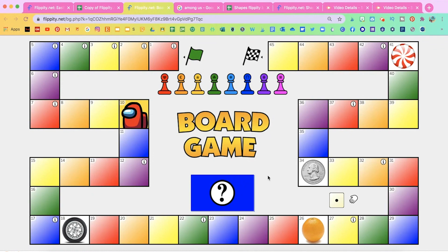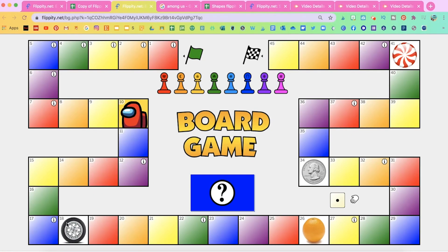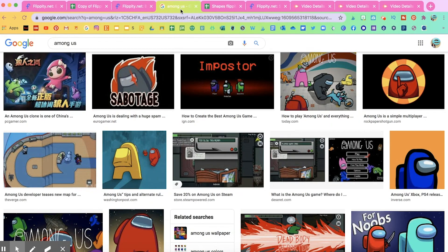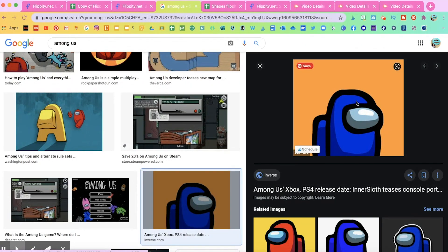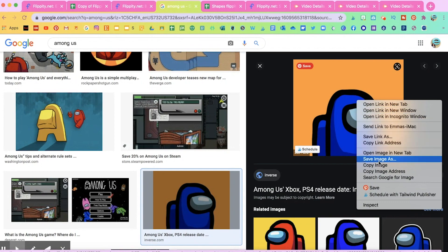I'll do one more example. I'm going to replace that tire here on number 18 with another cooler image. So I'm searching in Google and I like this blue one. I'm going to click on it and then right click. Go down to copy image address.